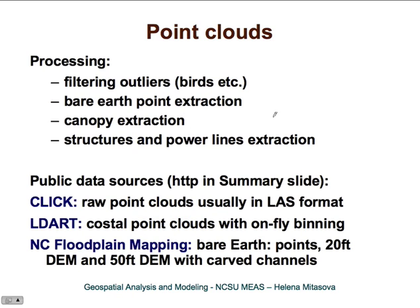Extensive processing is done on point clouds. The first thing to do is filtering outliers. This is usually done by the mapping company — the very oldest raw data used to have outliers that were very high in the air, such as birds. However, the newer data have already had these outliers filtered out. Then another type of processing that is done is bare earth point extraction, because we have multiple return data. The data can be reflected from the vegetation or from the buildings, so bare earth extraction is one of the important processing tasks.